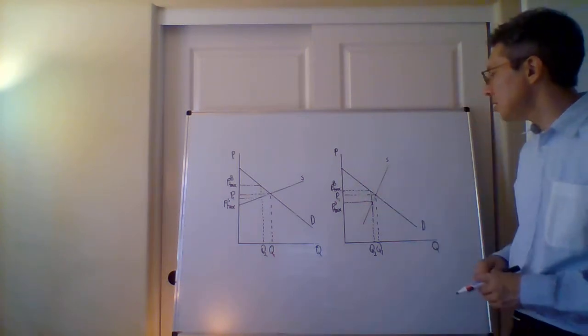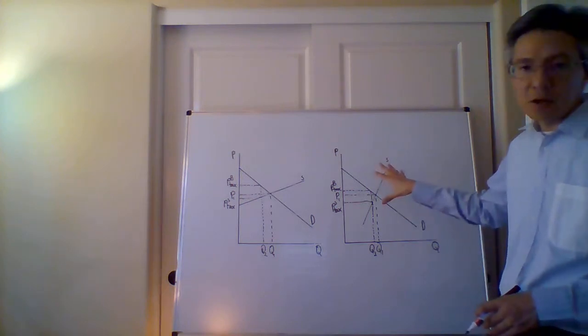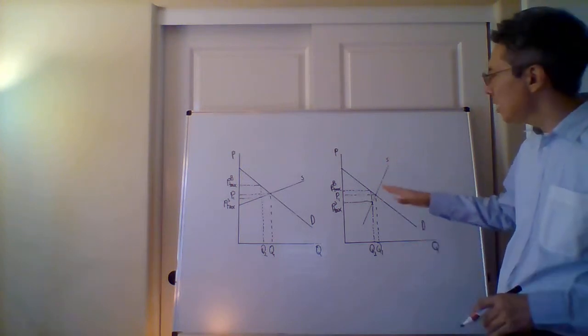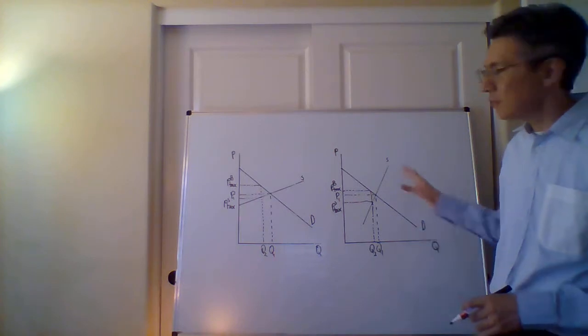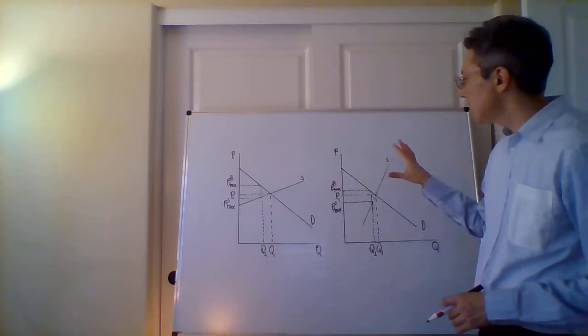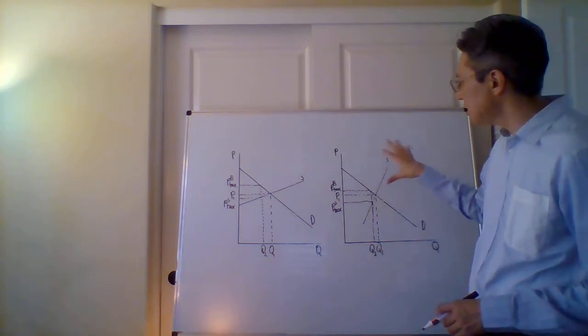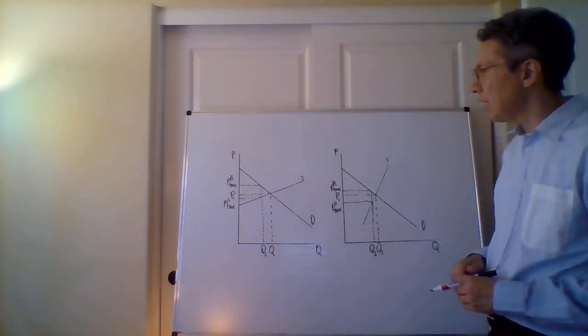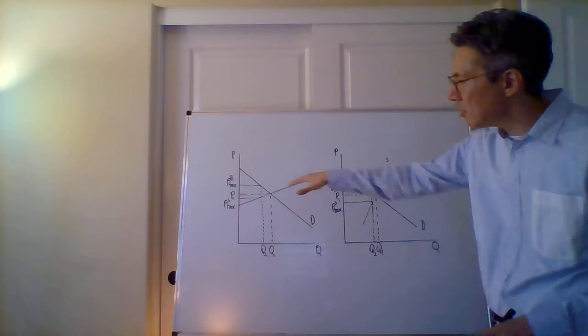So what is the difference here? What's different from before? The demand curve is actually the same for both graphs. So what's different? The supply curve. Here we see that it's steep, here we see that it's flat. So what does that mean if it's flat?